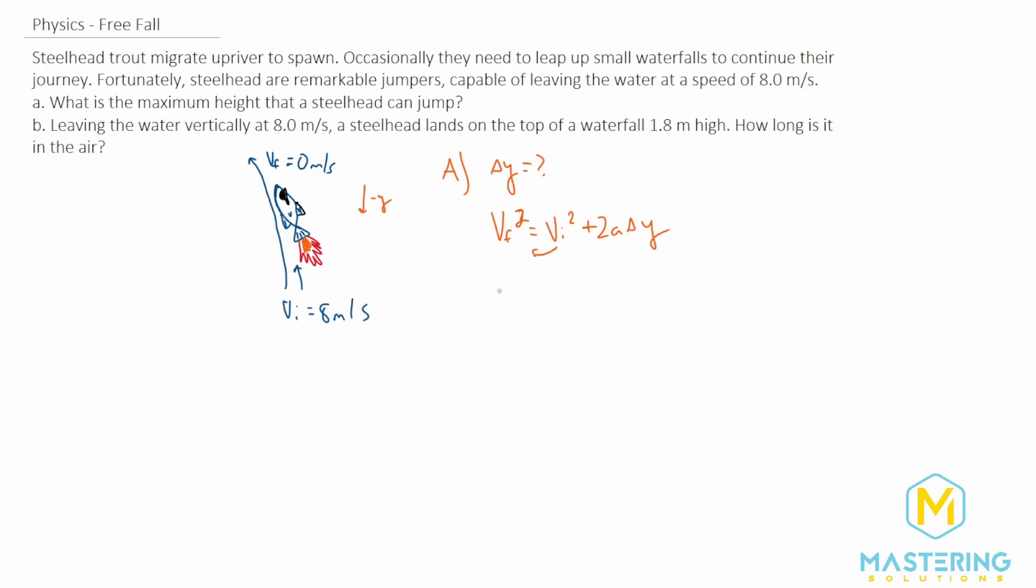Let's solve for delta Y. We'll move the initial velocity over: V final squared minus V initial squared equals 2A delta Y. Now we'll divide both sides by 2A. This will cancel and now we're left with delta Y equals V final squared minus V initial squared over 2A. We can simplify it even one step further because V final in this equation is actually zero, so this will go away.